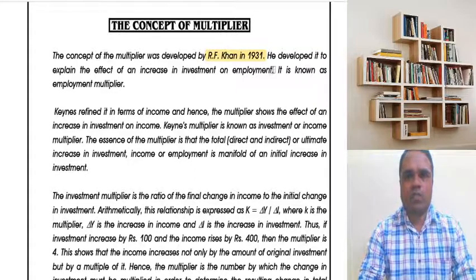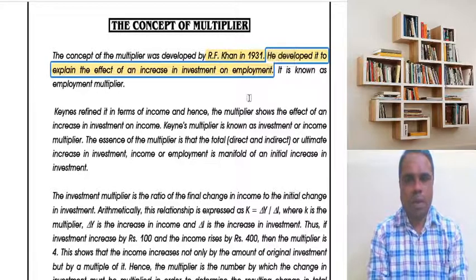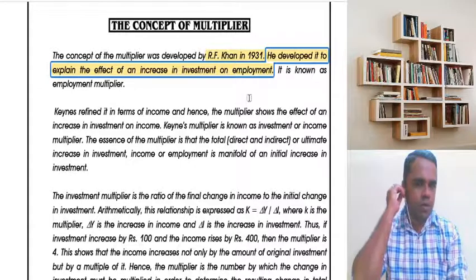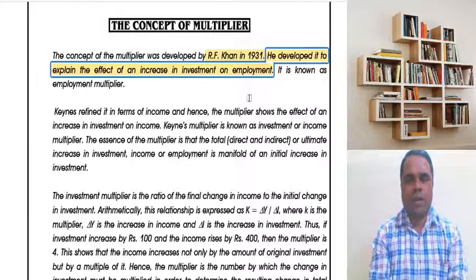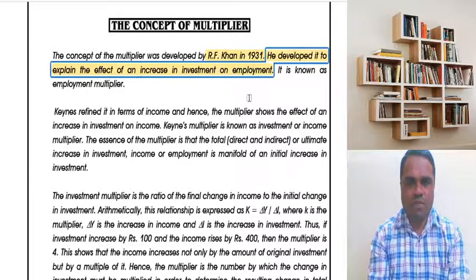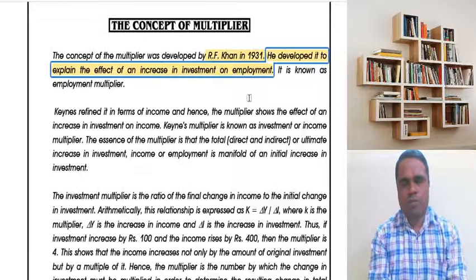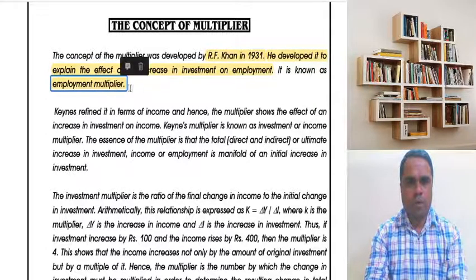A good question is: why was this concept developed? He developed it to explain the effect of increasing investment on employment. When the government increases investment, it has a direct impact on employment — how much effect does it have? To study the multiplier effect on employment from increased investment, R.F. Khan developed the concept in 1931. It was known as the Employment Multiplier.